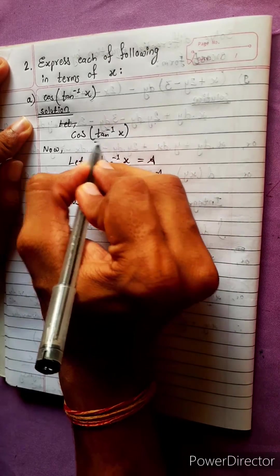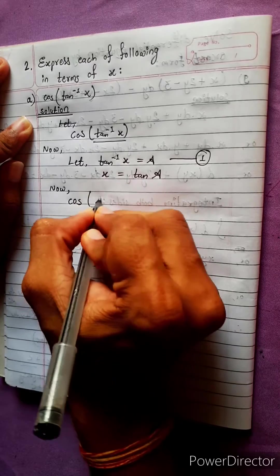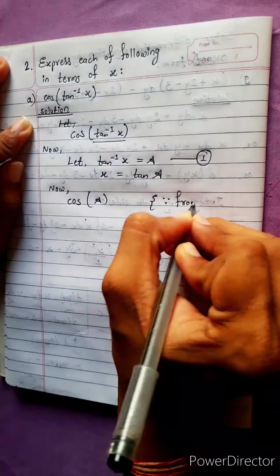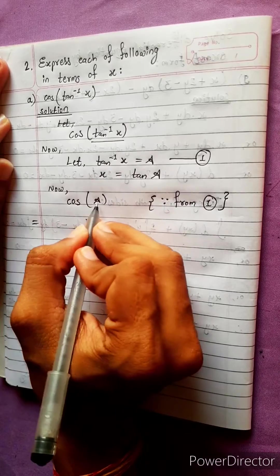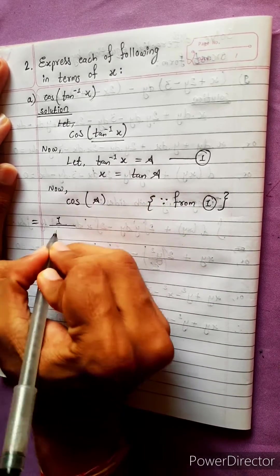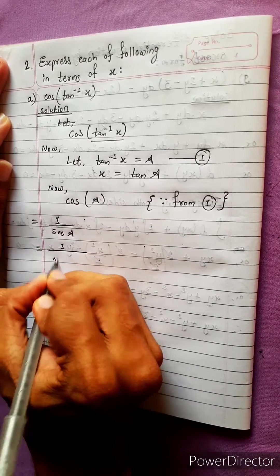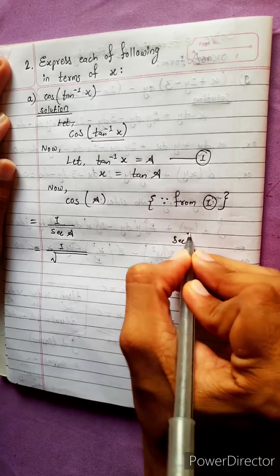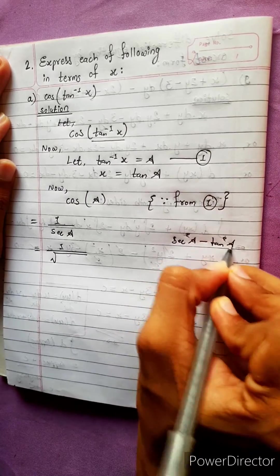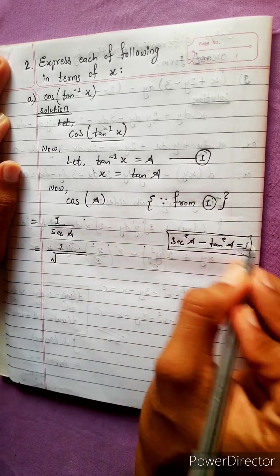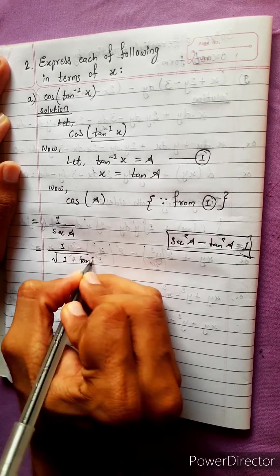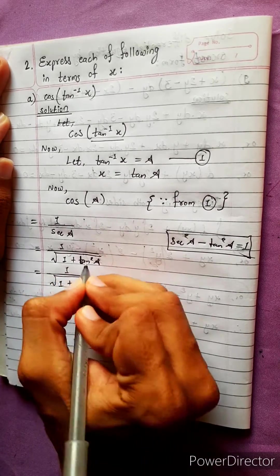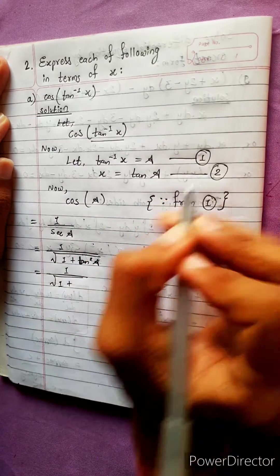cos(tan⁻¹ x) equals cos a. cos a equals 1 by sec a. Using the identity: sec²a = 1 + tan²a, so sec a = √(1 + tan²a). Therefore cos a = 1 by √(1 + tan²a) = 1 by √(1 + x²).